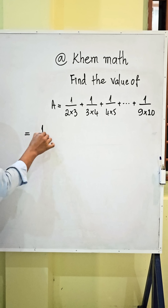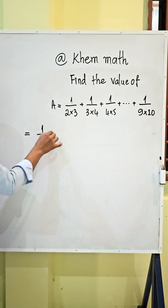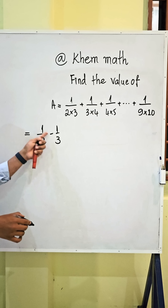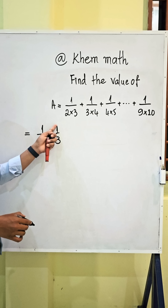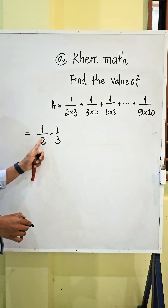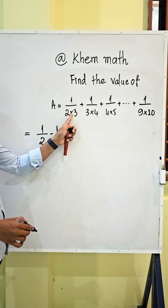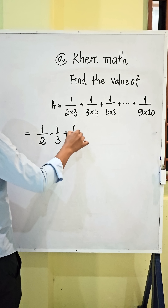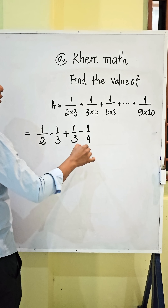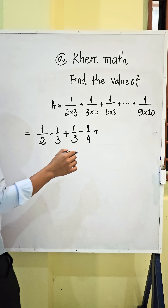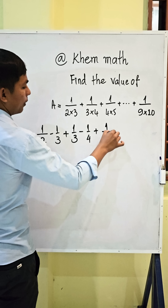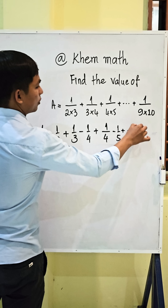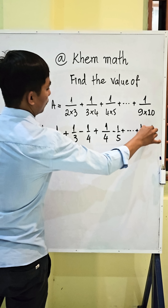We get this equal 1 divided 2 minus 1 divided 3. If we take 3 minus 2 it equals 1, so we get 1 divided by 2 times 3 — the same. So we get 1 divided 3 minus 1 divided 4, plus 1 divided 4 minus 1 divided 5, plus 1 divided 5, and 1 divided 9 minus 1 divided 10.